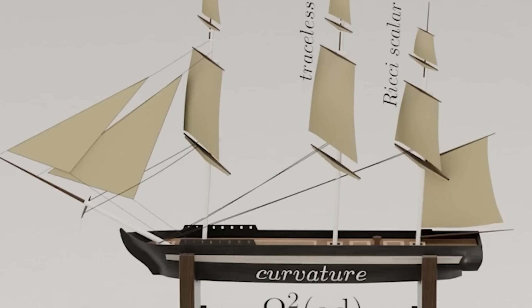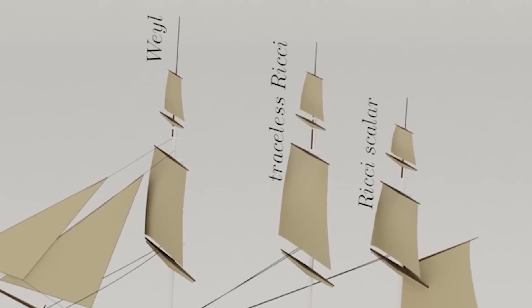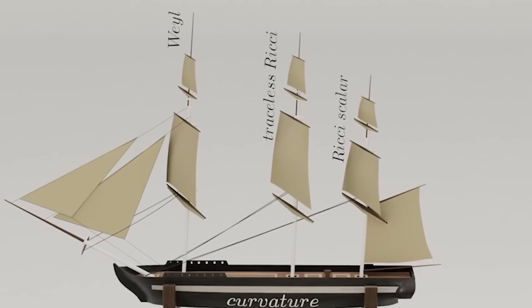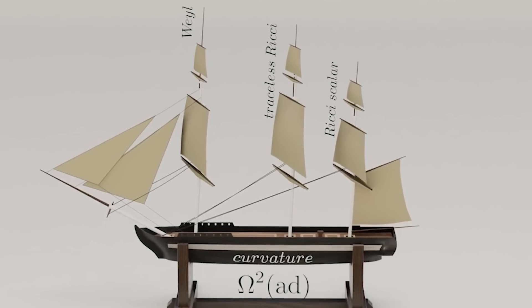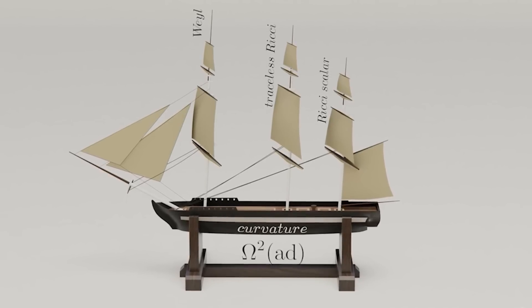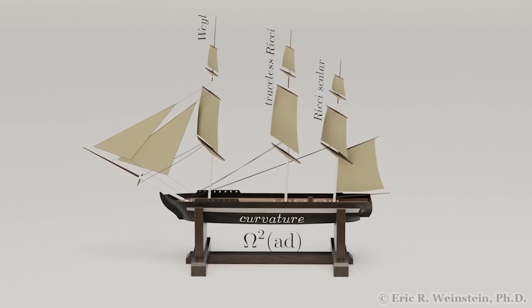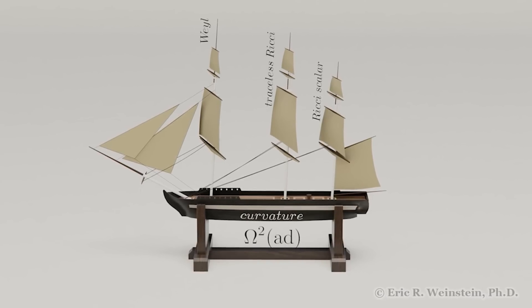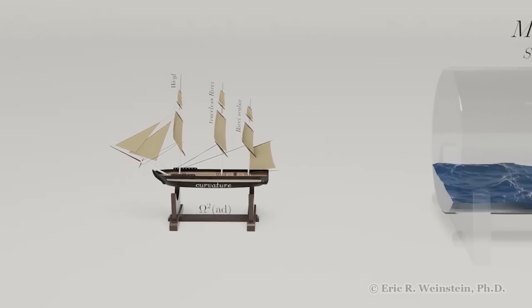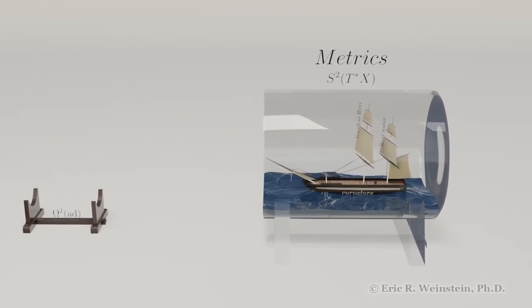That ship that you're seeing is called Curvature. And it has three masts because it has three irreducible components, usually. One mast is called Vile Curvature, one mast is called Traceless Ricci Curvature, and one mast is called Ricci Scalar. And the first greatest insight, maybe, of the 20th century was the way in which we could feedback the curvature of the Levi-Civita connection into being a covector field on the space of all metrics. And this is depicted as a boat going into a bottle that has a rather wide opening.